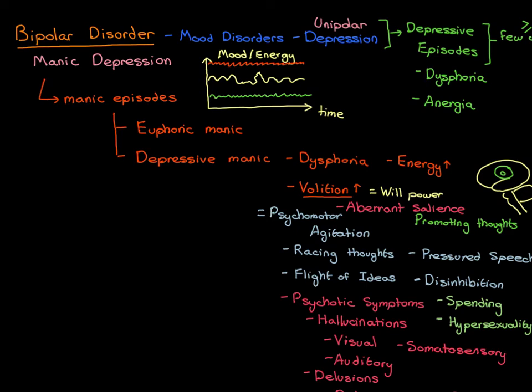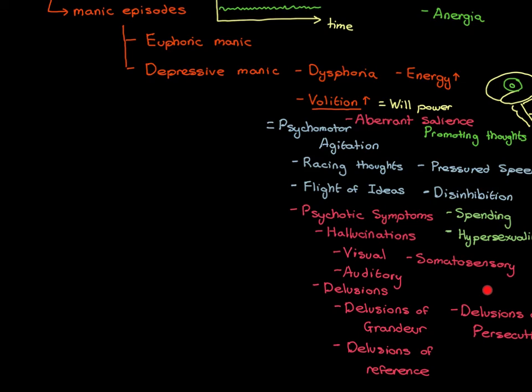People in a depressive manic episode are not happy but have a huge amount of energy — they can't sleep, end up staying up all night doing things, and may have hallucinations and delusions of grandeur. This can make manic episodes quite difficult to differentiate from psychotic episodes of schizophrenia. If the person has racing thoughts, pressured speech, flight of ideas, and very high energy, that points toward a manic episode; whereas very low energy and negative symptoms points toward schizophrenia.